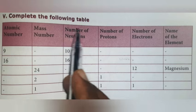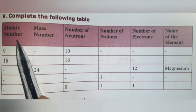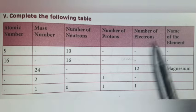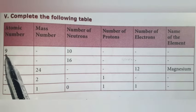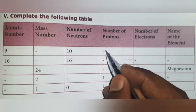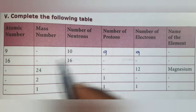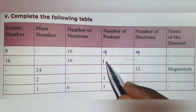Next part: complete the following table. Here, atomic number, number of protons, and number of electrons all will be the same. If atomic number is 9, number of protons is also 9, number of electrons is also 9. Atomic number 16, number of protons also 16, number of electrons also 16.